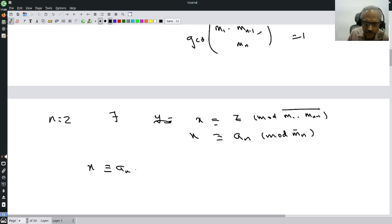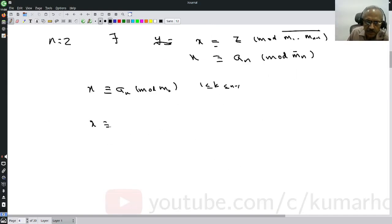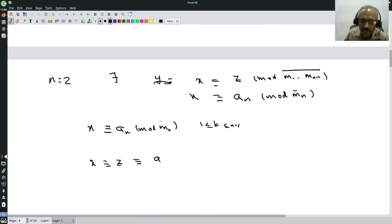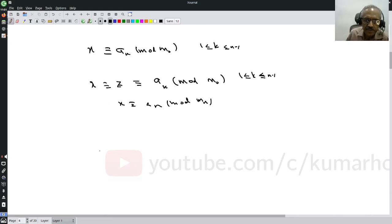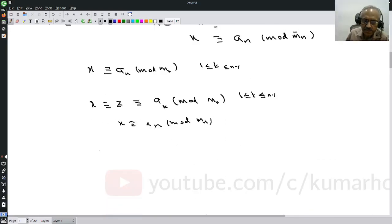You claim x is congruent to ak mod mk for all k now. That is very clear because x is congruent to z and z is congruent to ak mod mk, 1 less than or equal to k less than or equal to n minus 1, and x is congruent to an mod mn. Therefore, x is a simultaneous solution of the n congruences.